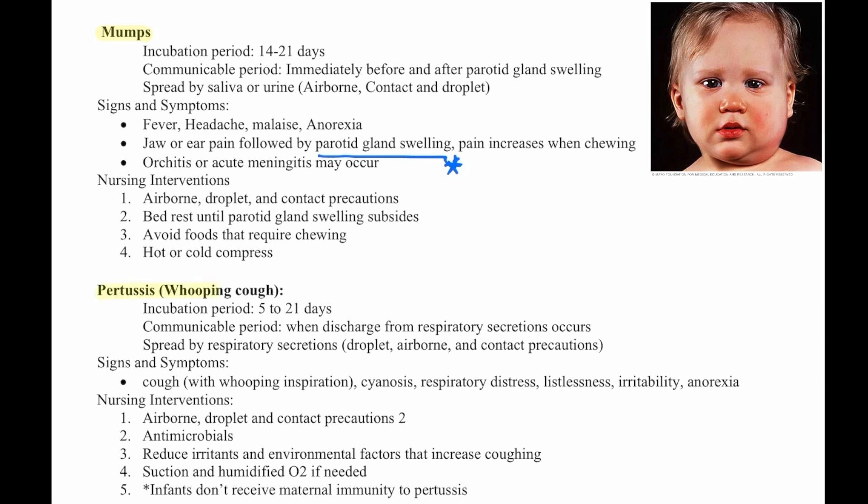Then we have pertussis, also known as whooping cough. The incubation period is 5 to 21 days, with a communicable period when discharge from respiratory secretions occurs. It is spread by respiratory secretions, so droplet, airborne, and contact precautions. Signs and symptoms are cough with a whooping inspiration, cyanosis, respiratory distress, listlessness, irritability, and anorexia.